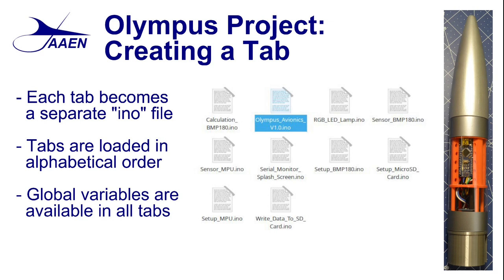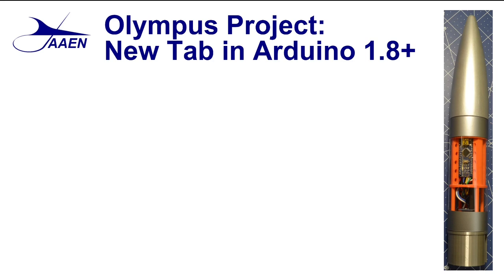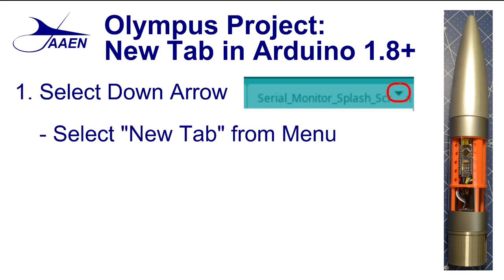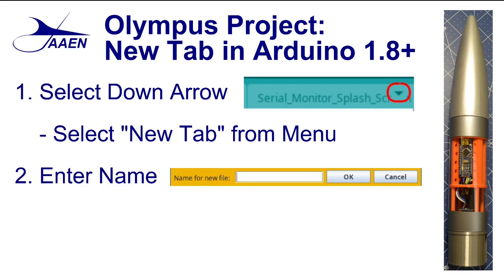How you create a new tab depends on which version of the Arduino software you're using. If you're using version 1.8, go to the top row where the tabs are located and look all the way to the far right for a small triangular arrow pointing down. Select that down arrow and you'll get a pop-up menu — select New Tab. Near the bottom of the screen you'll see a yellow bar where it says name for the new file. Enter the name, click OK, and a new blank tab will be opened where you can begin to write your new function.